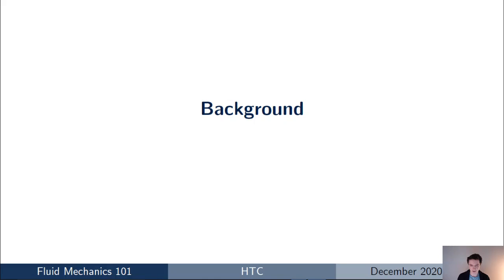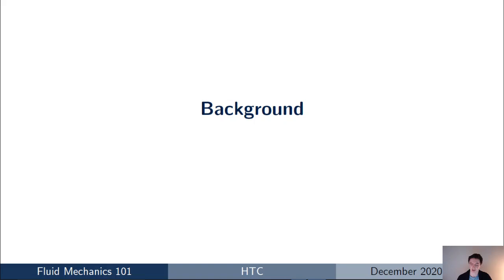I'm going to start the talk by giving a little bit of background about heat transfer coefficients and how they're calculated, and then after that I'm going to move into looking at specifically how CFD codes compute heat transfer coefficients. For general background, the most important thing to remember is that a heat transfer coefficient is defined by Newton's law of cooling, which you can see there on the slide.